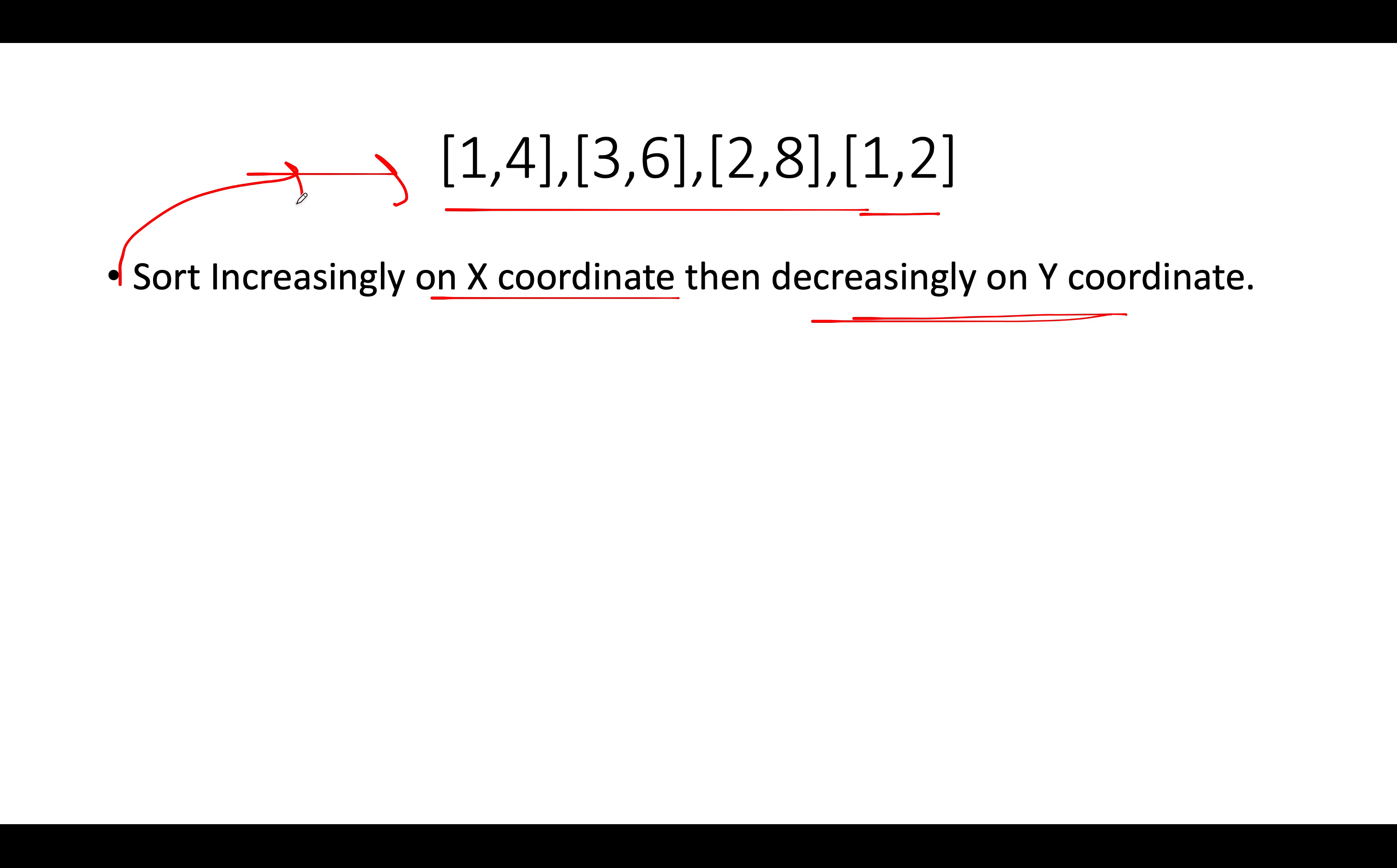You can see that the x coordinate matches over here. So in such case we will give precedence to a higher y coordinate. As a result of it, [1,4] comes at first then [1,2]. Let's proceed ahead. The next would be sorting on the basis of x coordinate. So we will get [2,8] followed by [3,6].